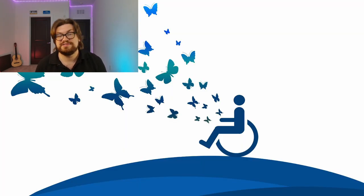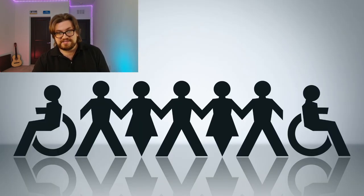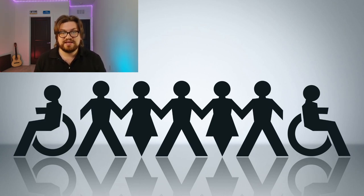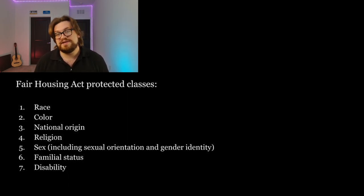Familial status and disability took 14 more years to be added to the list. They were added by amending the Fair Housing Act, creating the Fair Housing Amendments Act of 1988. This act strengthened the original Fair Housing Act, extended its protections to two additional groups, and gave the federal government more power to enforce anti-discriminatory laws. It also gave power to more homebuyers and renters, as its safety net covered families with children and individuals with disabilities.